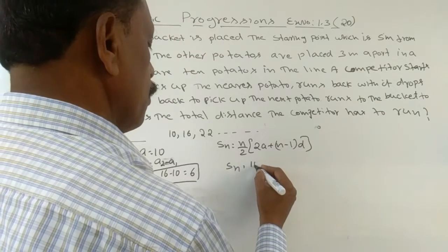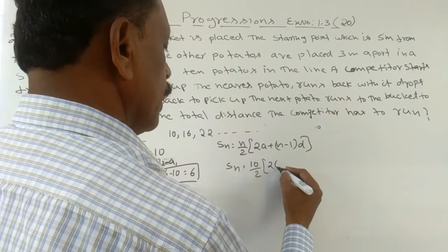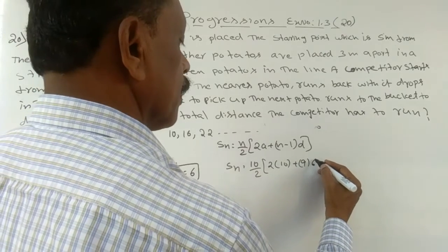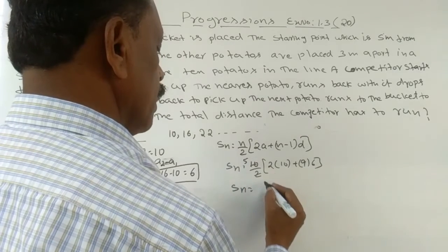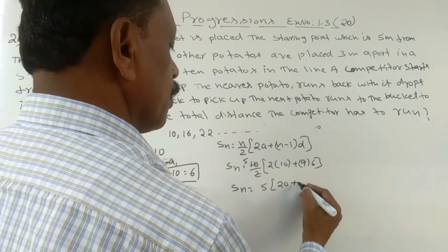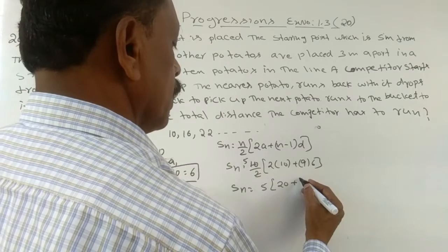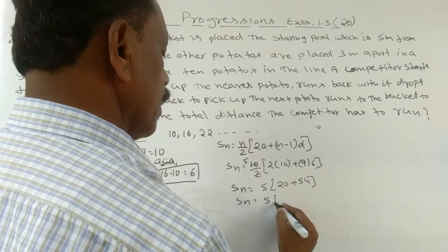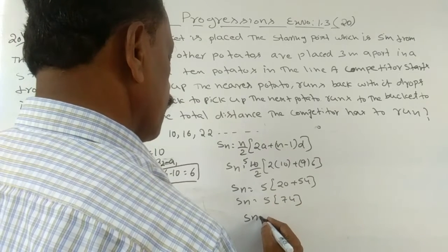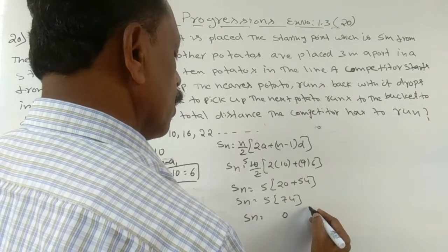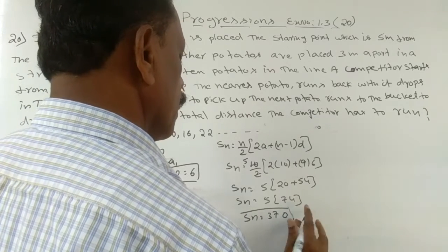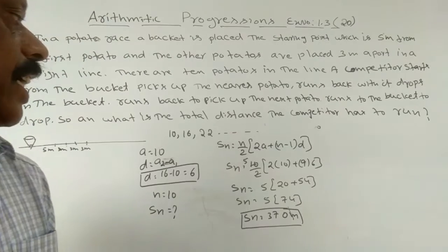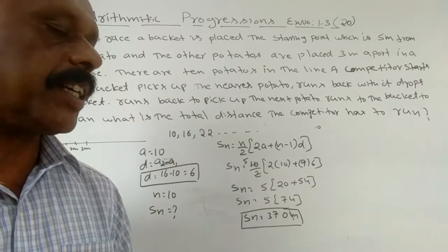Substituting: Sn = 10/2 × (2×10 + 9×6) = 5 × (20 + 54) = 5 × 74 = 370 meters. Therefore the total distance the competitor has to run is 370 meters.